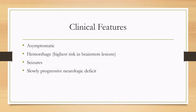A lot of times these cavernous malformations can be asymptomatic and they're detected on imaging for brain MRI done for other reasons. However, they can also cause hemorrhage — these are abnormal capillaries, so sometimes they can break and cause hemorrhage. The highest risk of hemorrhage is in the brainstem lesions. These malformations can also cause seizures as well as slowly progressive neurologic deficits.